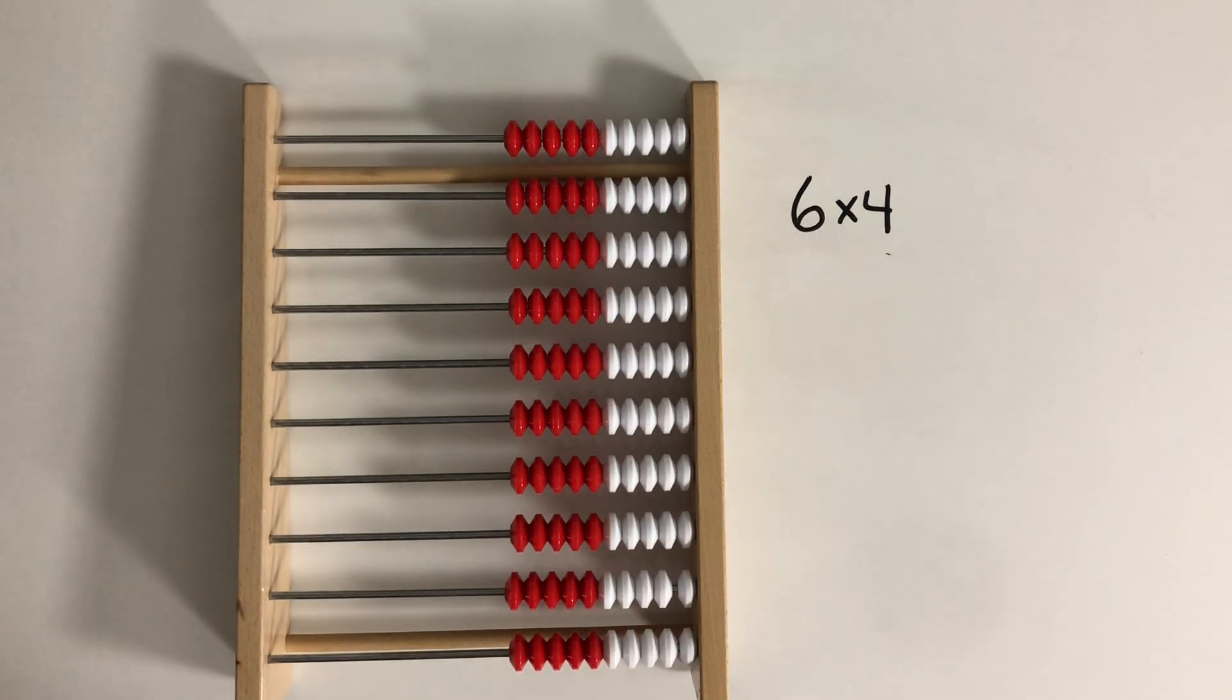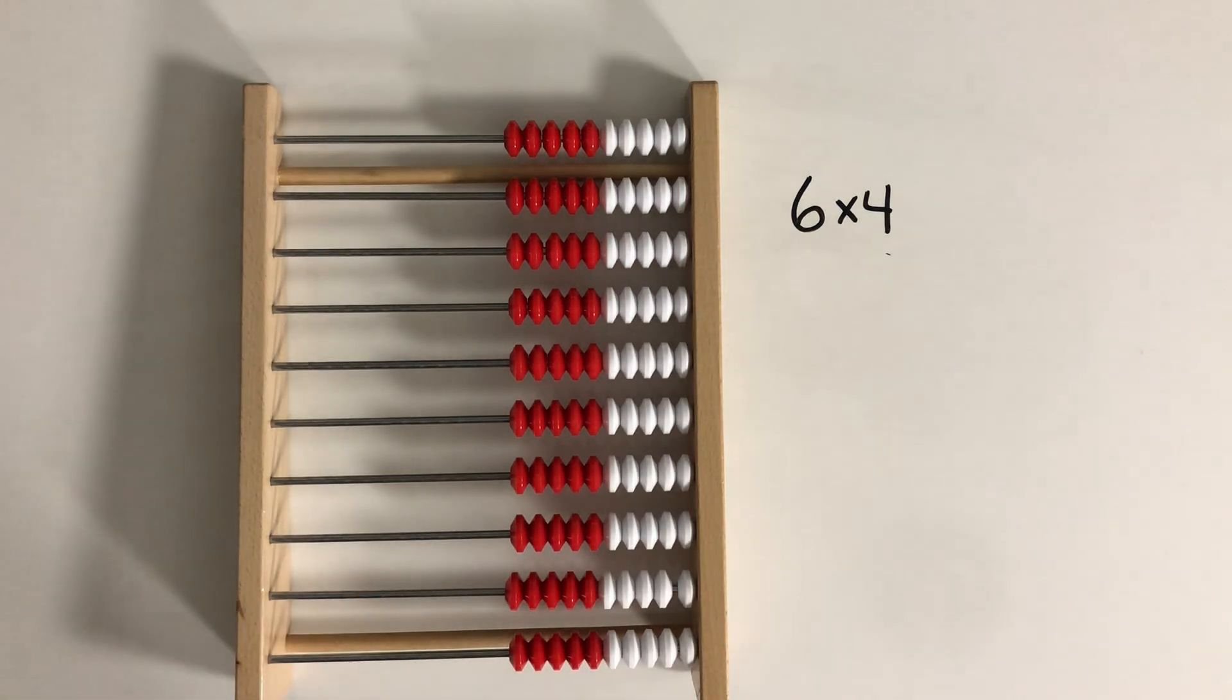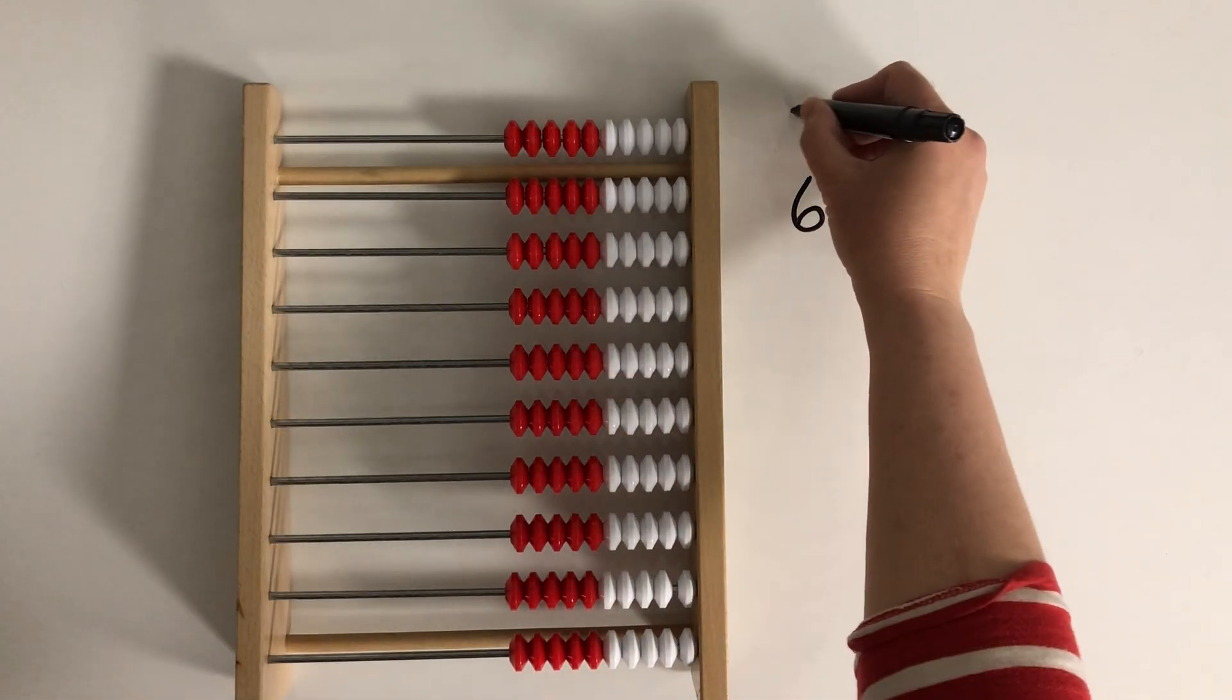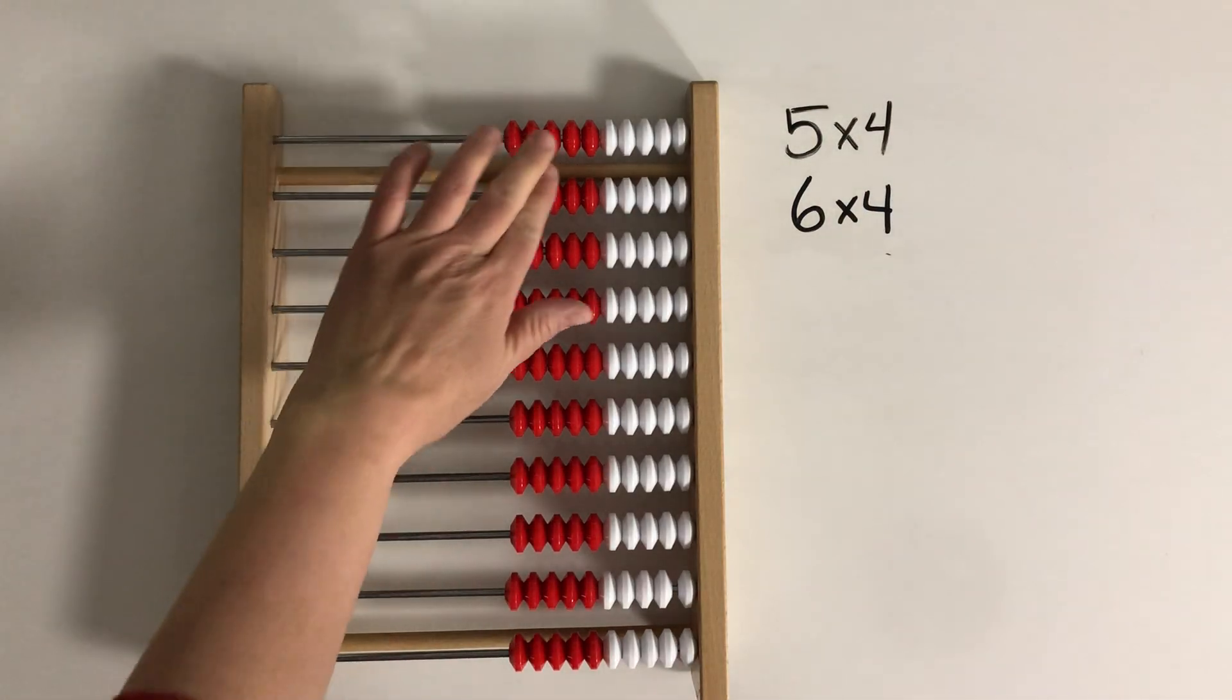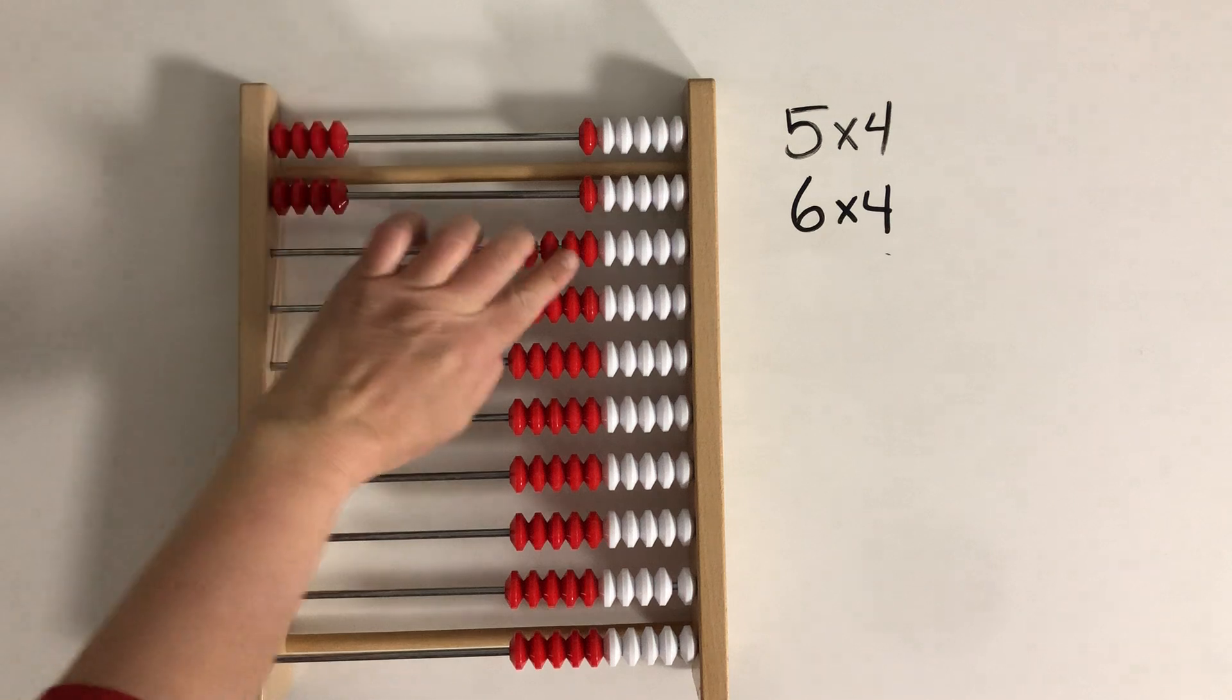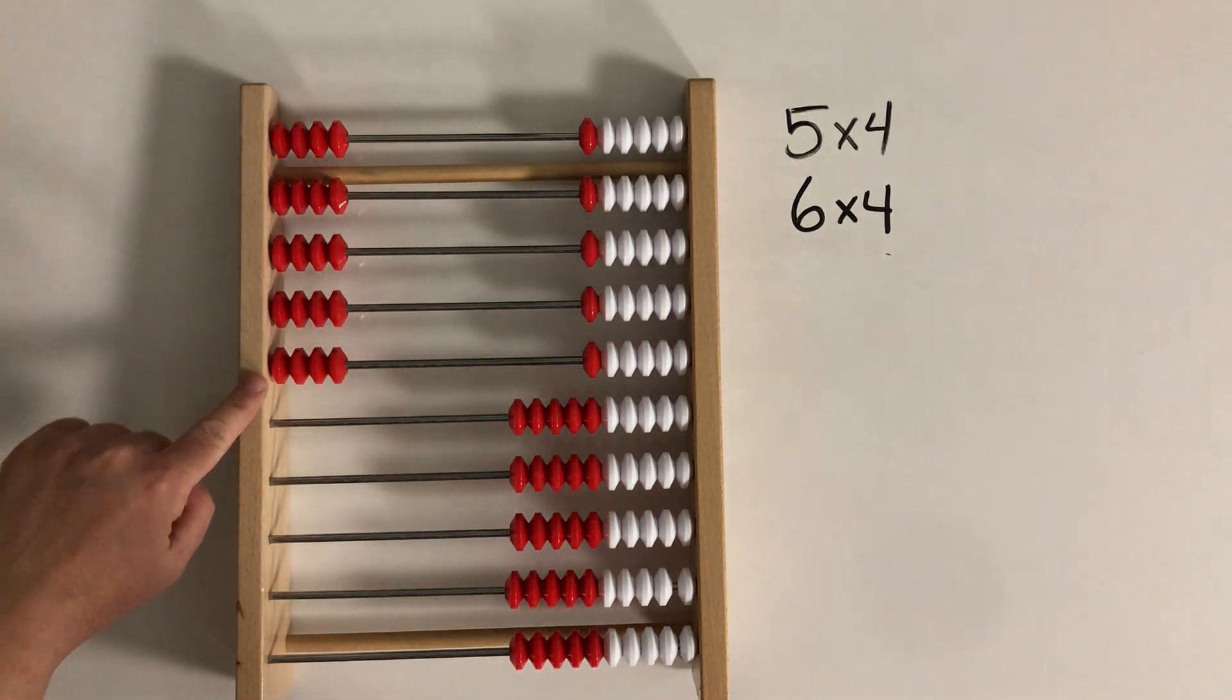One strategy is that we can think of something nearby that we know, a nearby fact. So let's say that we are trying to solve 6 times 4. Now what if I start with 5 times 4? Because I know that 5 groups of 4 makes 20.